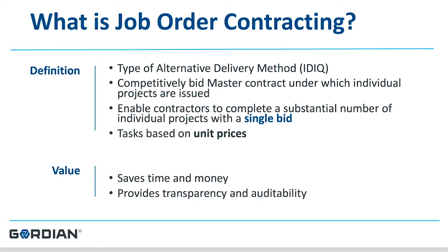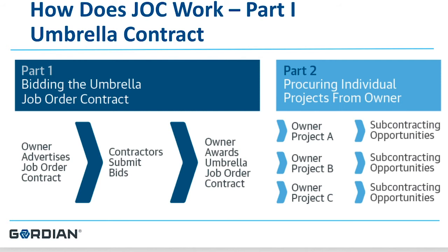It also provides transparency and auditability to the process. So how does job order contracting work? Think of job order contracting as an umbrella type of contract, and underneath that umbrella you can order lots of different scopes of work.